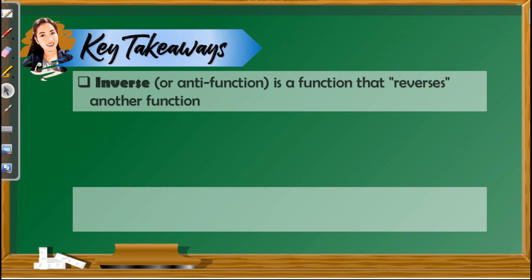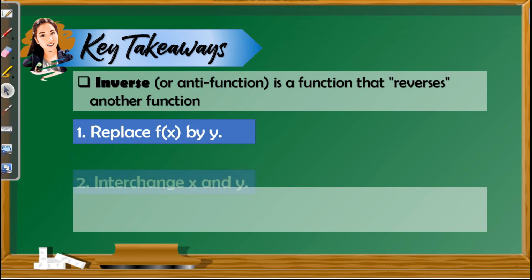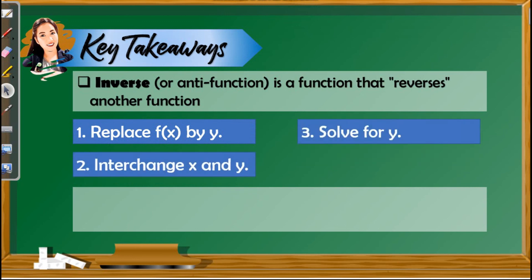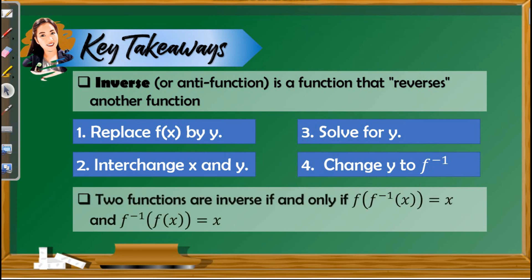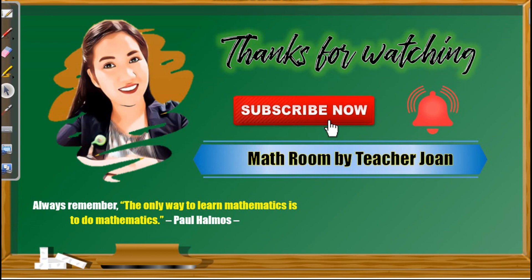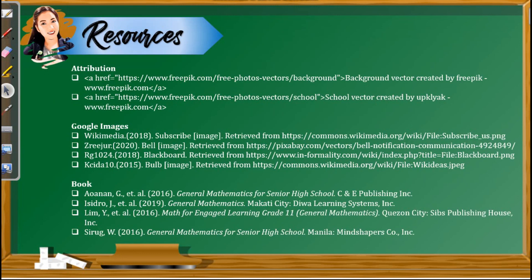Here are the key takeaways in this lesson. An inverse or anti-function is a function that reverses another function. The steps are: first, replace f of x by y; second, interchange x and y; third, solve for y; and fourth, change y to f inverse or whatever variable is given in the function. Also, to prove that two functions are inverses, note that f(f⁻¹(x)) = x and f⁻¹(f(x)) = x. Here is the end of our lesson. Thanks for watching. If you are new to my channel, please subscribe to Math Room by Teacher Joanne, and click the notification bell to be updated. Bye everyone, see you in our next video.